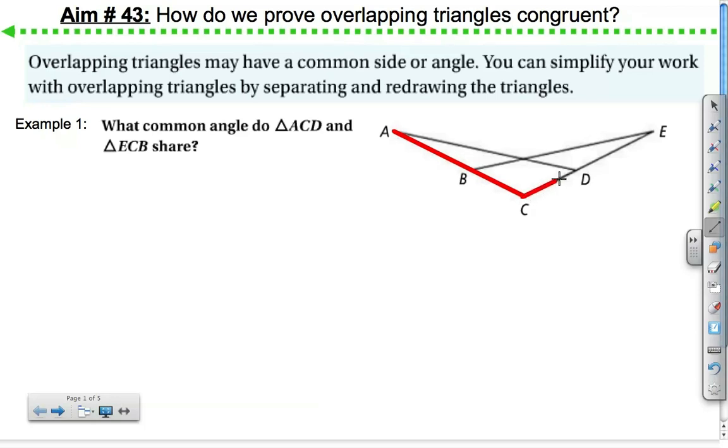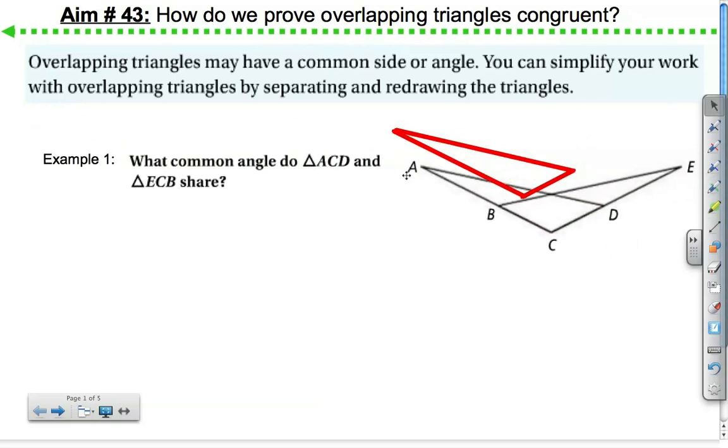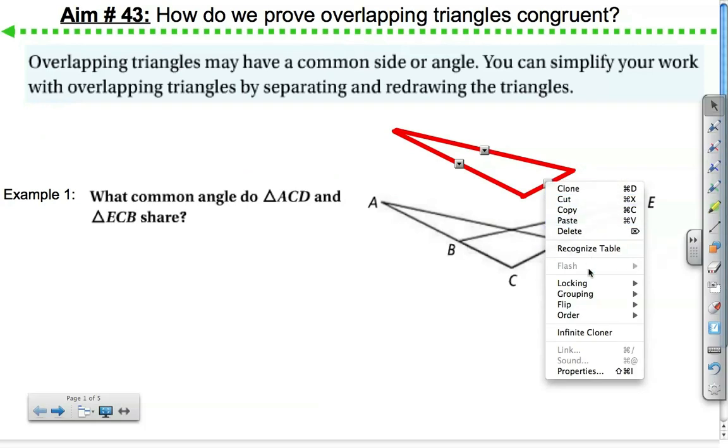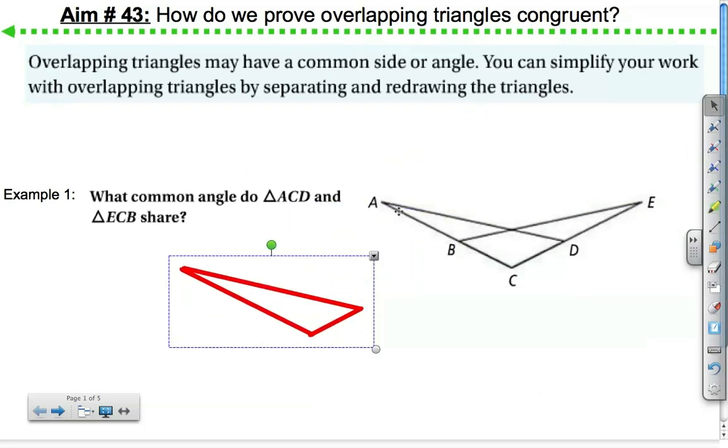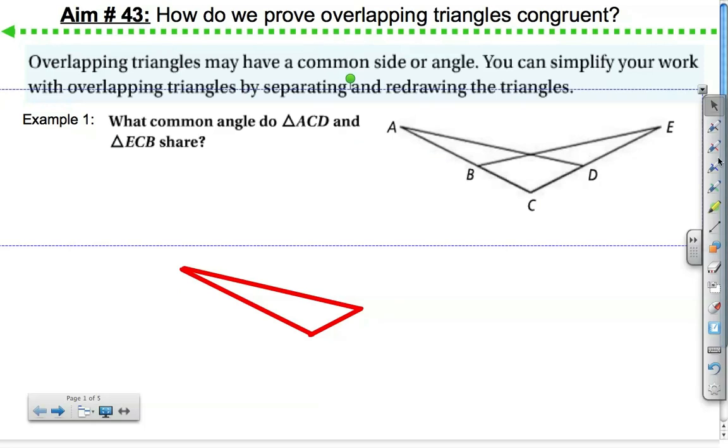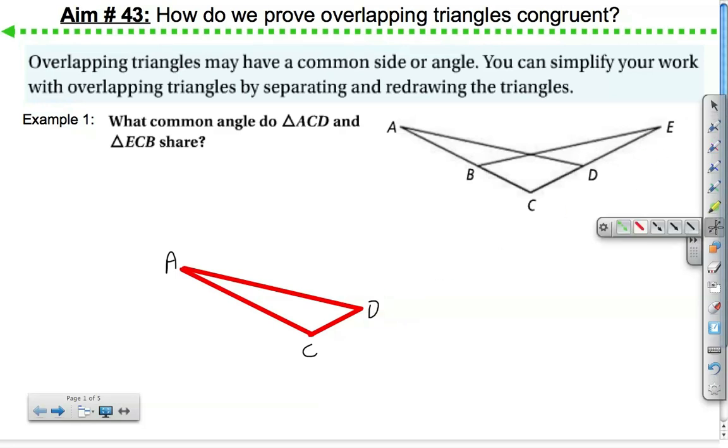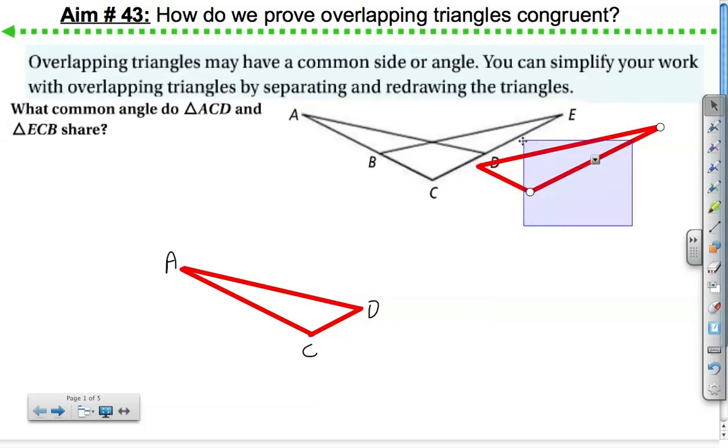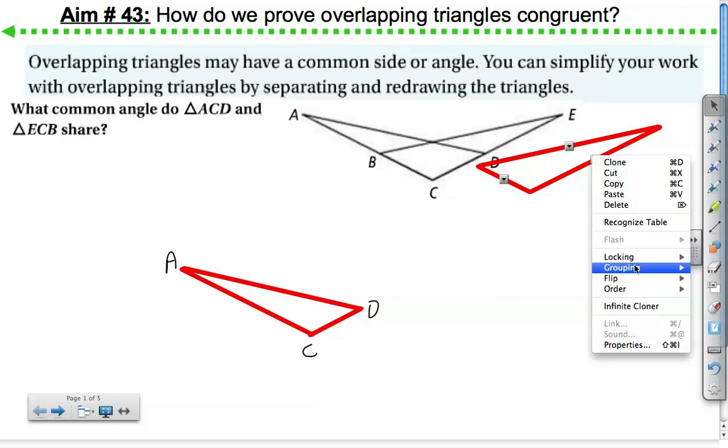So here we have triangle ACD. Let's pull that out and separate it. So this is A, C, D. And then we have triangle ECB. E, C, B.